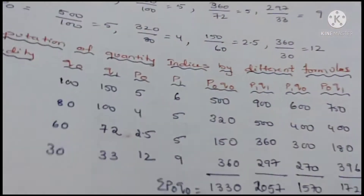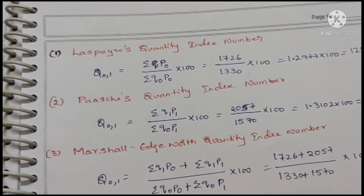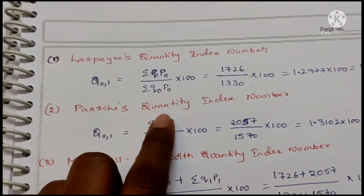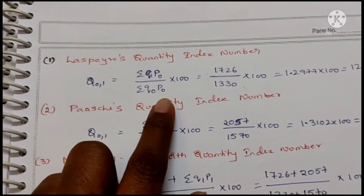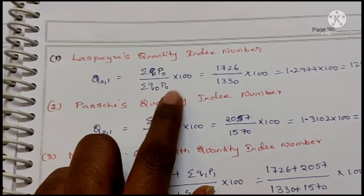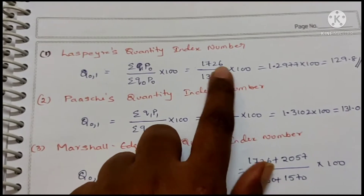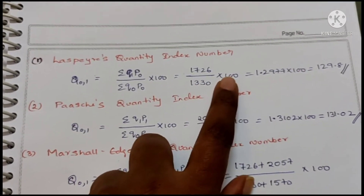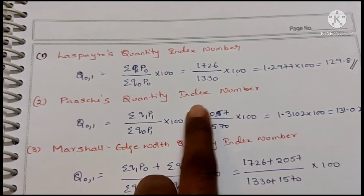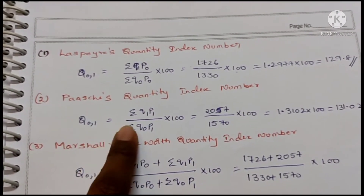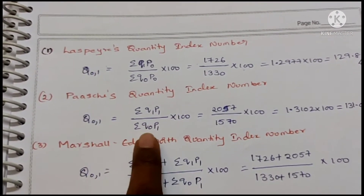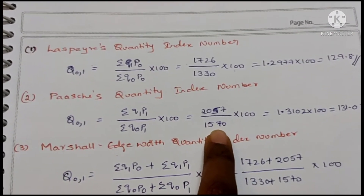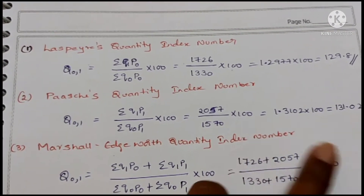Applying Laspeyre's quantity index: Q01 = (ΣQ1P0 / ΣQ0P0) × 100 = 1726 ÷ 1330 × 100. Next, Paasche's: Q01 = (ΣQ1P1 / ΣQ0P1) × 100 = 2057 ÷ 1570 × 100.